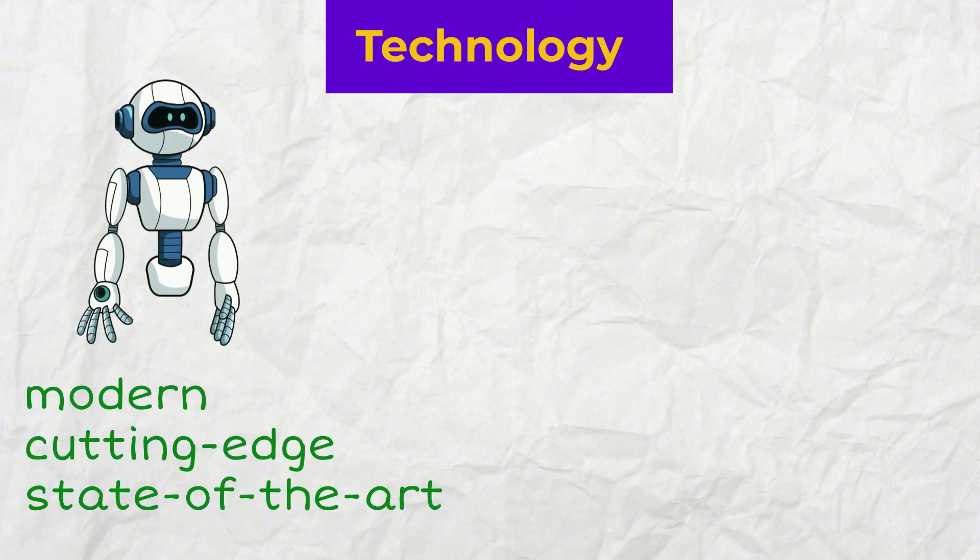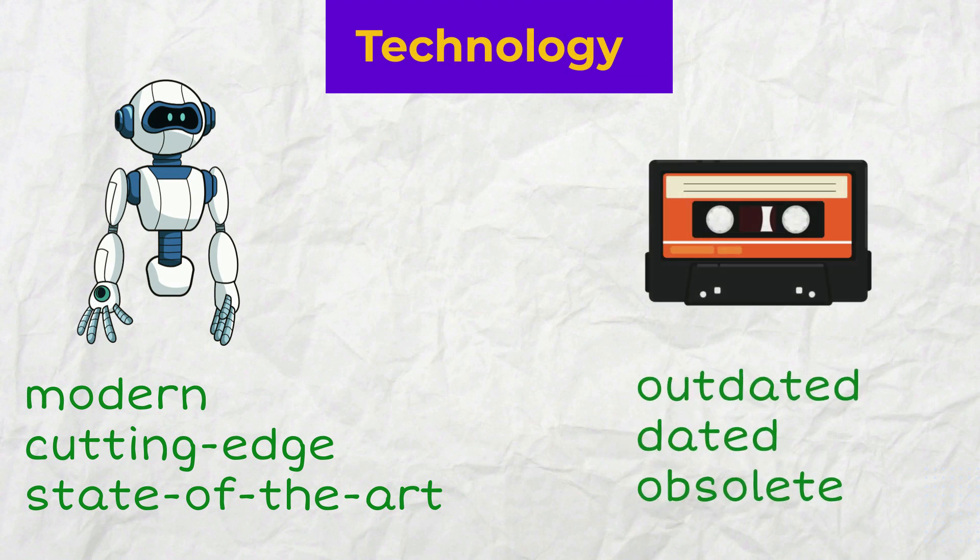Technology may be modern, cutting edge or state of the art, which means new the most recent. Or outdated, dated and obsolete, which is the opposite of modern.